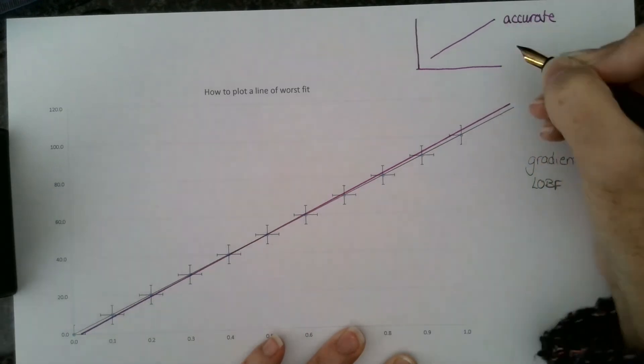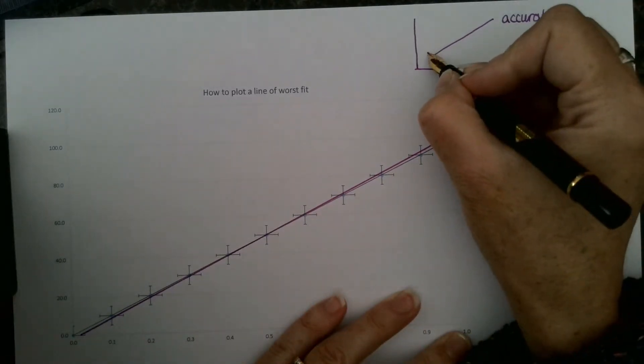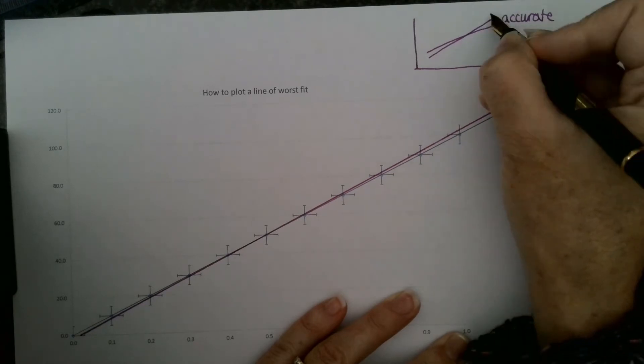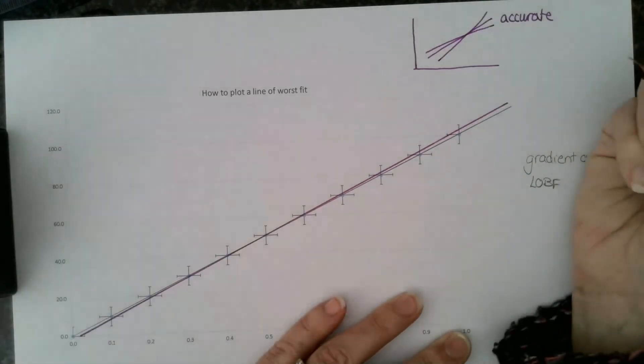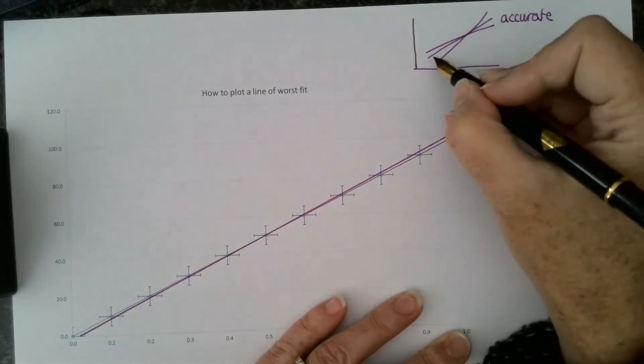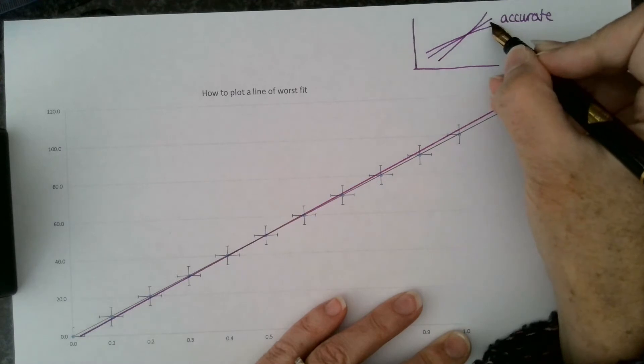That is going to be the correct gradient giving my accurate value. If you're doing a calculation, that will be useful. Your line of worst fit should be one side and your other line of worst fit should be the other side. The line of best fit gradient should be in the middle between the gradients of worst fit.